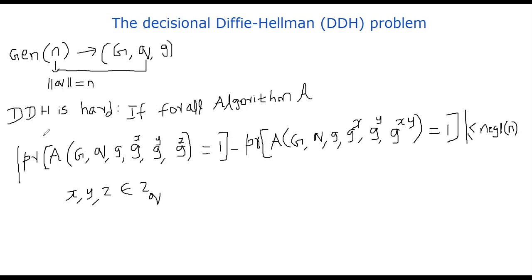What is the meaning of DDH being hard? It actually means that suppose you select x, y, z randomly from the set zq and compute g power x, g power y, and g power x, y. So this is basically this side. You feed these parameters to an algorithm, say algorithm A, and ask the algorithm, can you tell whether did I give you g power x, y, or did I give you g power z.